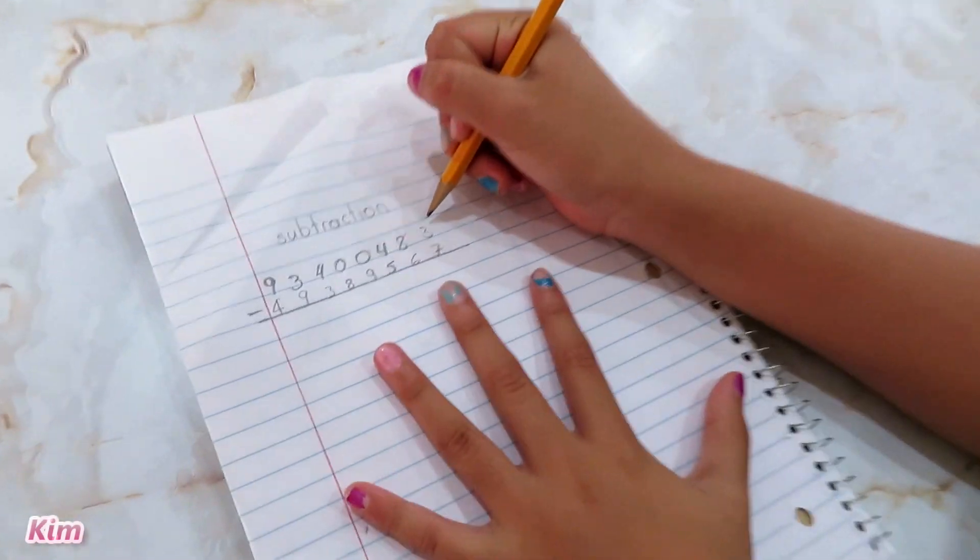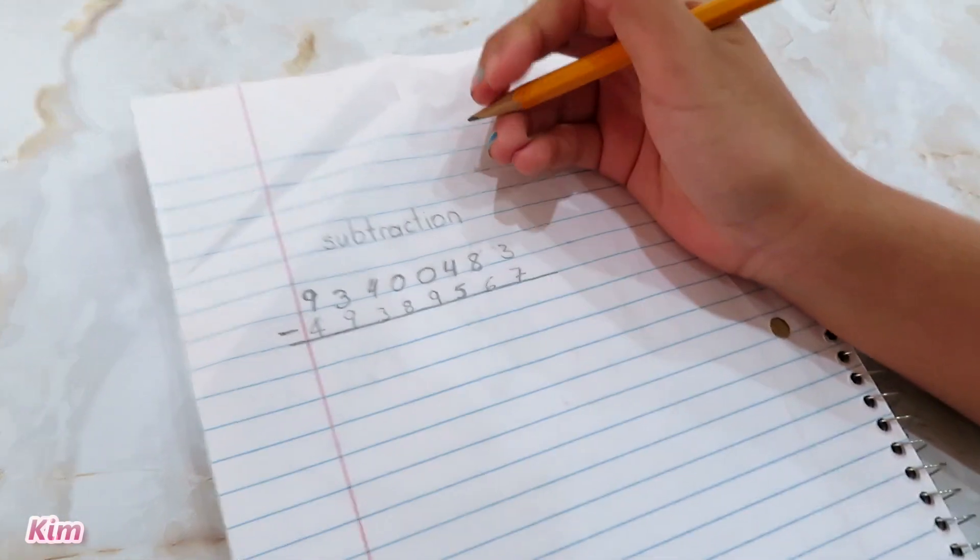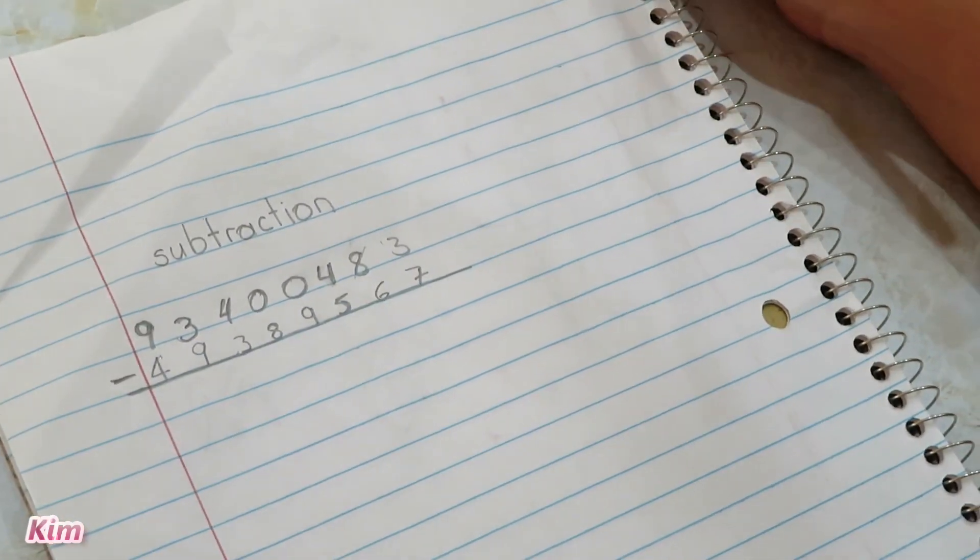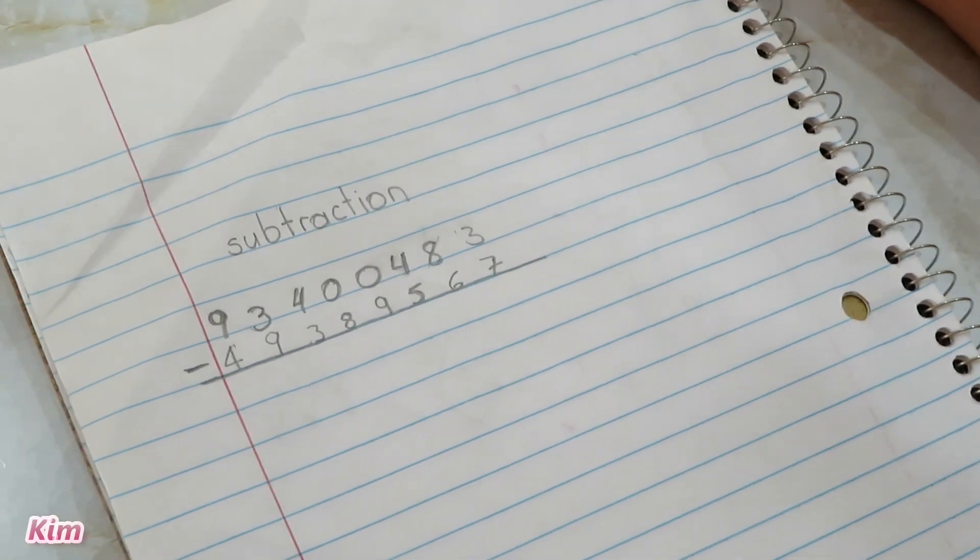First, we start here. We have to take away 7 from 3, but we can't do that because 3 is too small.